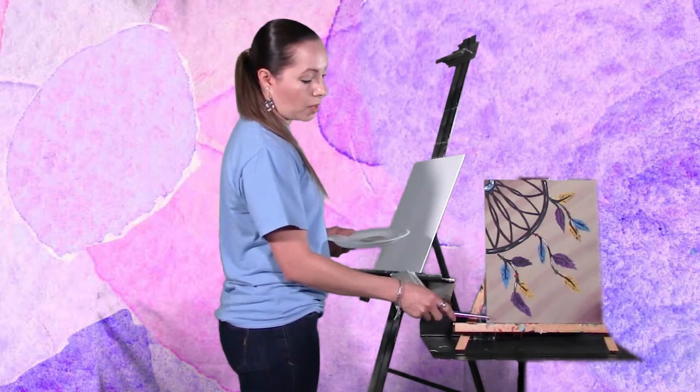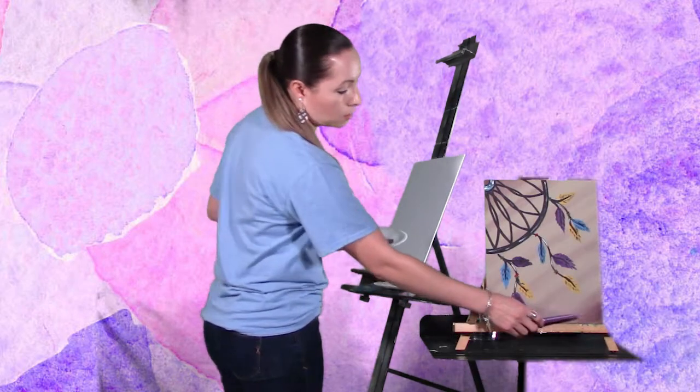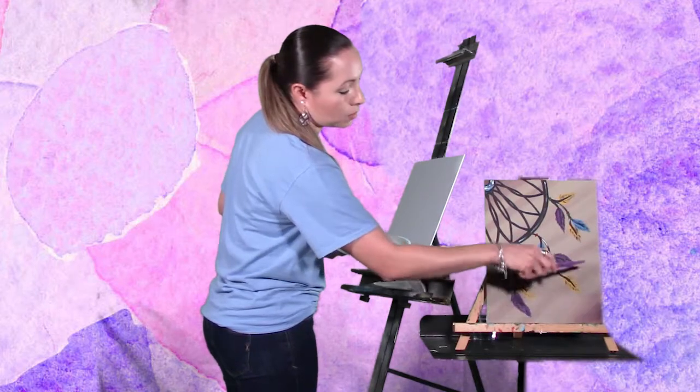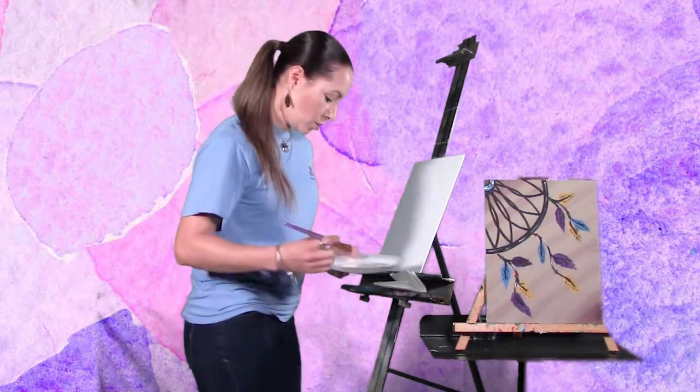So we're going to start with the background using tan. We're going to start from the corner, paint at an angle, and then add some brown in between. Okay, so let's start.